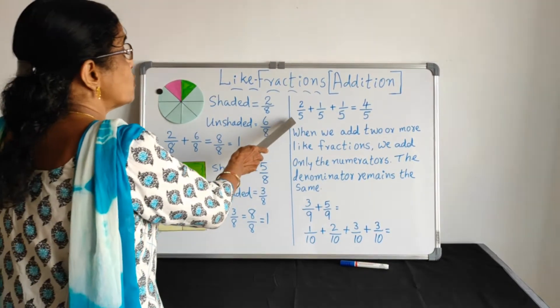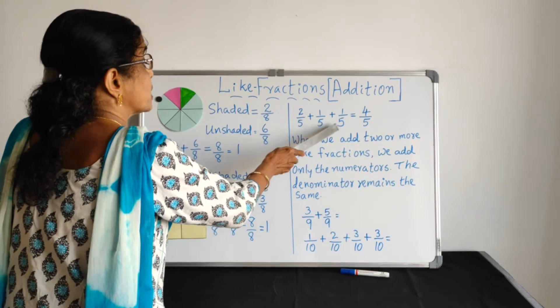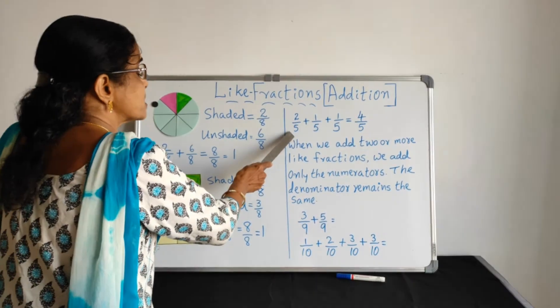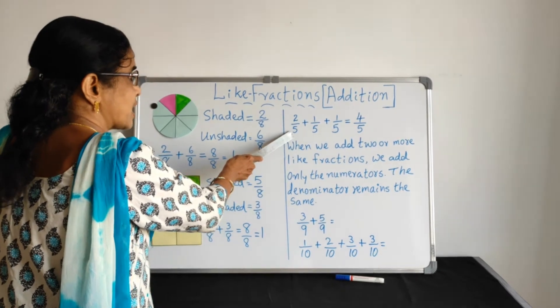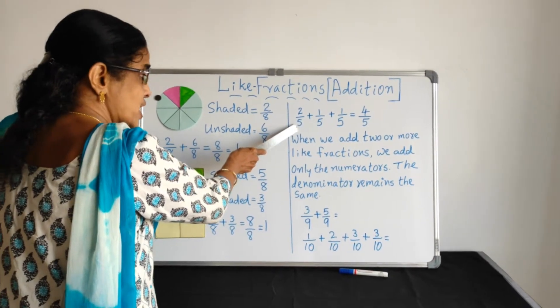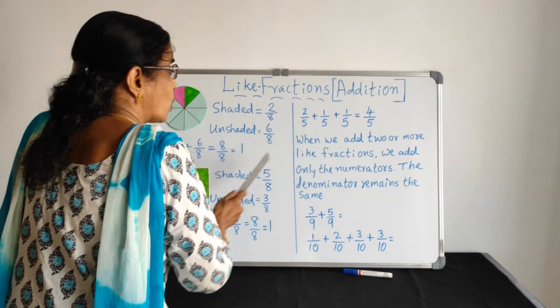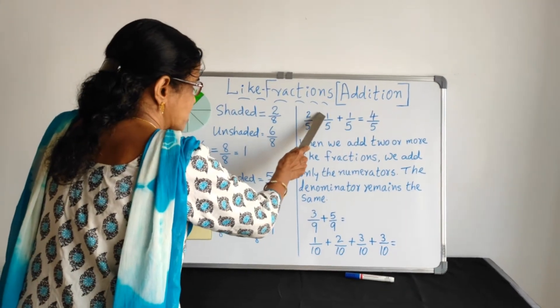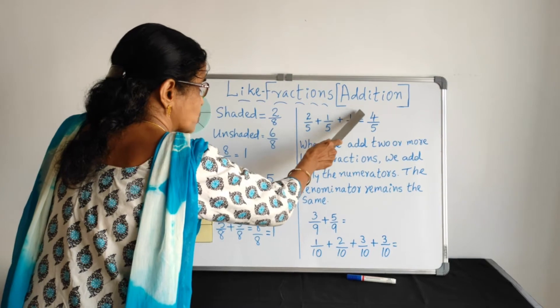So, 2 by 5 plus 1 by 5 plus 1 by 5. What type of fractions? Denominators are same. So they are like fractions. So, no change for the denominator. Only you have to add the numerators. 2 plus 1 is 3, 3 plus 1 makes 4. So the answer is 4 by 5.